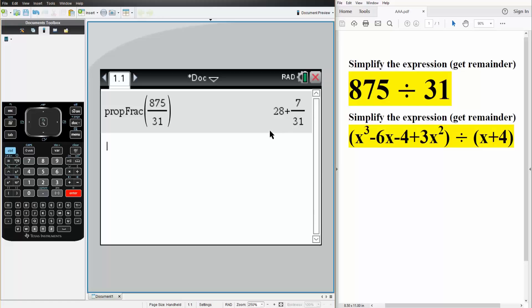So if you think about it, 28 times 31 is 868, not 875. But if we add 7, we get 875. That's why there's a remainder of plus 7 divided by 31. So we just went over a remainder.